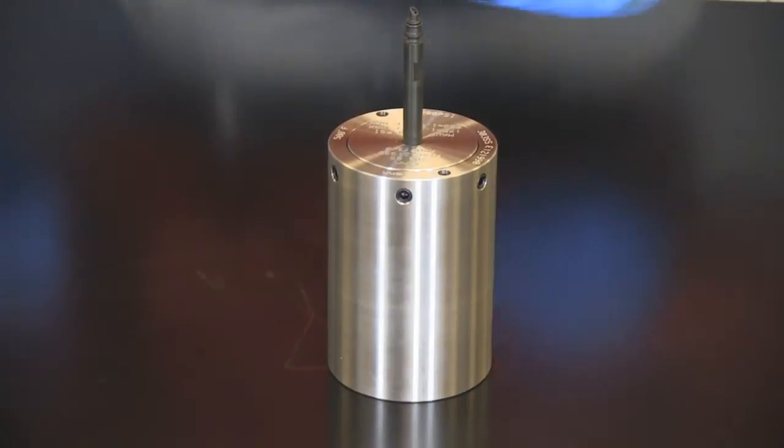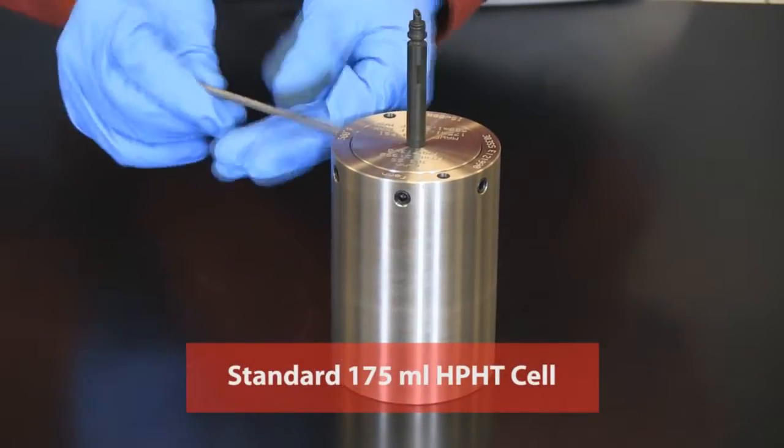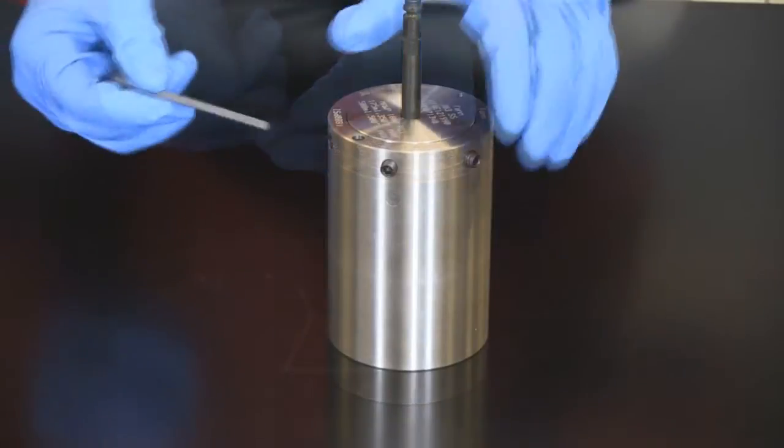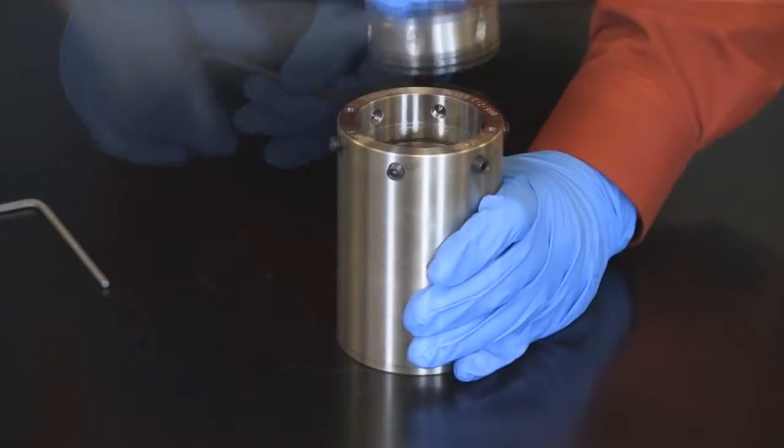This is the standard 175 milliliter high-pressure, high-temperature cell used today. Six hex screws secure the cap to the body while under pressure. A filtrate screen is integrated into the bottom of the cap.